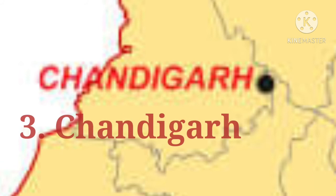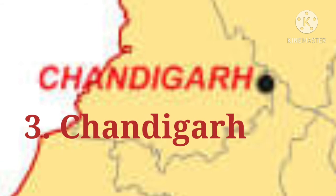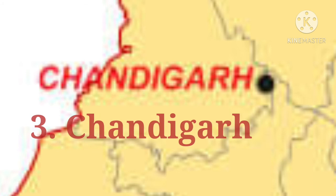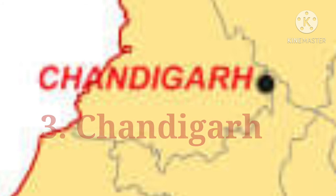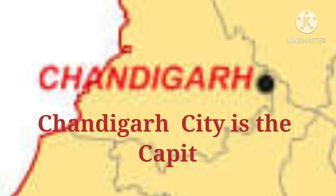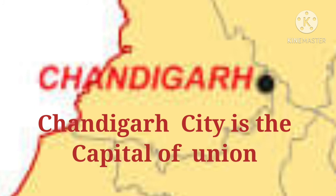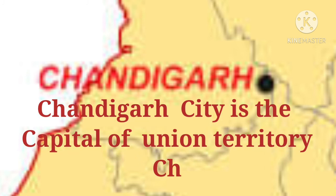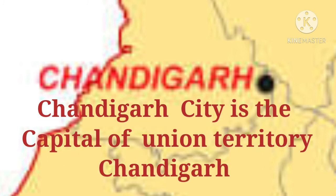Chandigarh is a Union Territory of India. It is the capital of both Punjab and Haryana. Chandigarh city is the capital of Union Territory Chandigarh. The land area of this Union Territory is approximately 114 km².